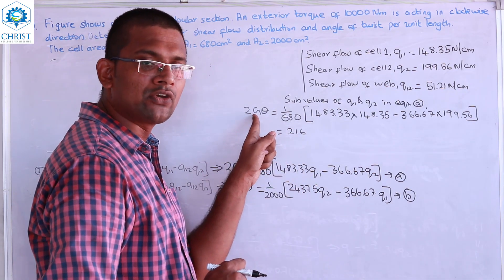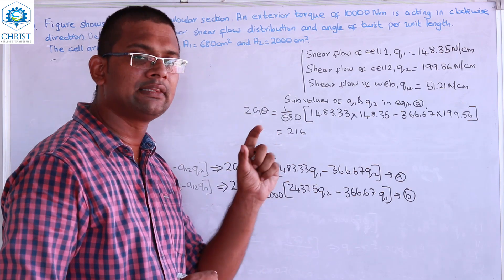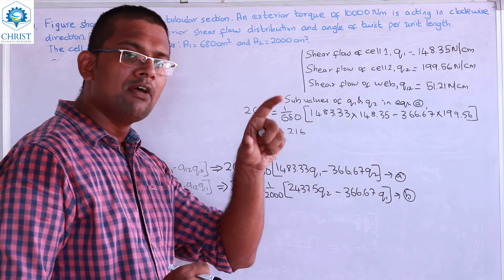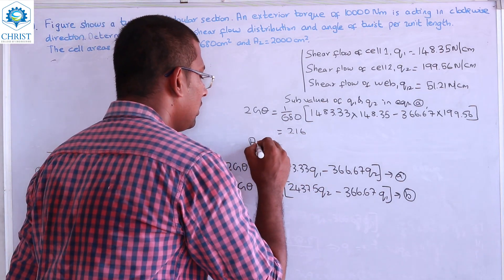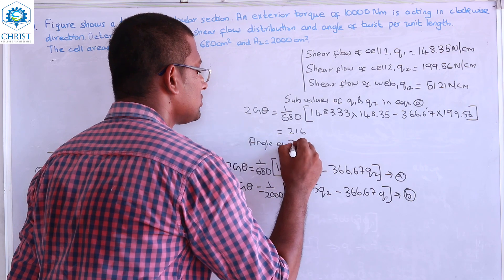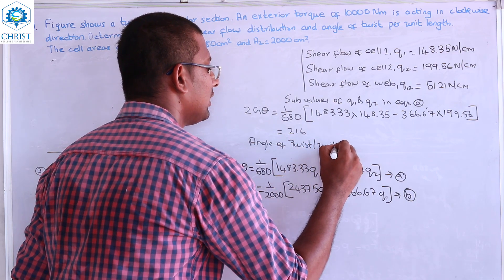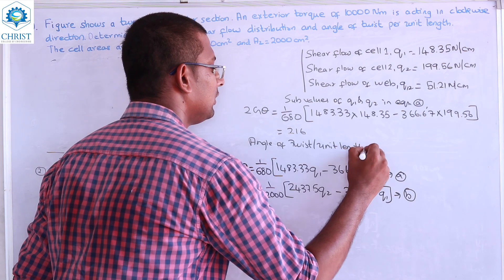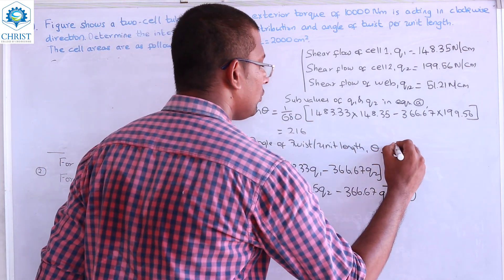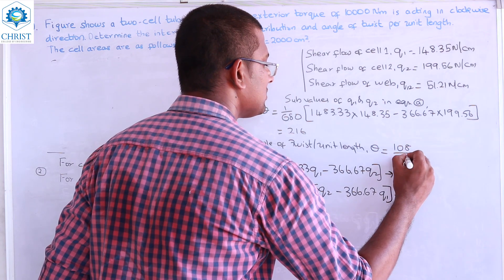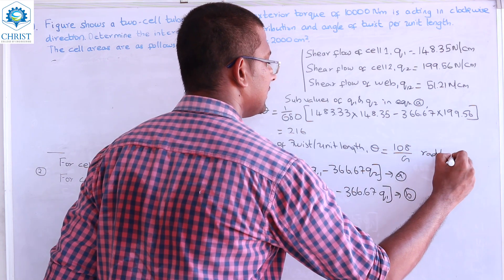The value of G is the shear modulus, so the angle of twist per unit length θ is expressed in terms of G. Theta equals 108/G radians per centimeter, which completes the solution.